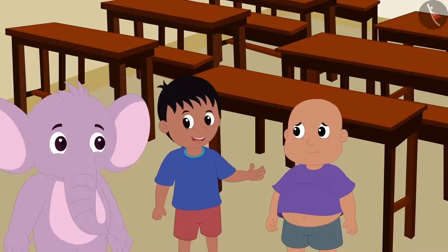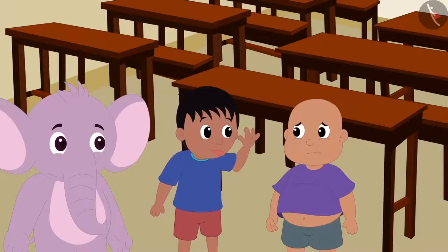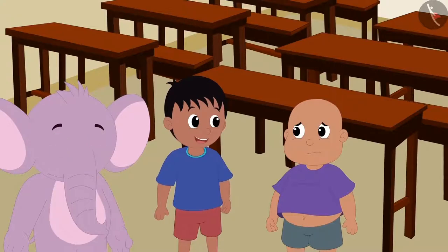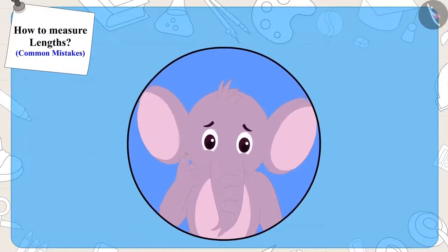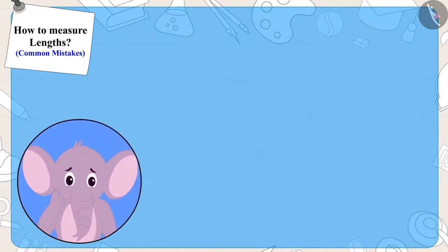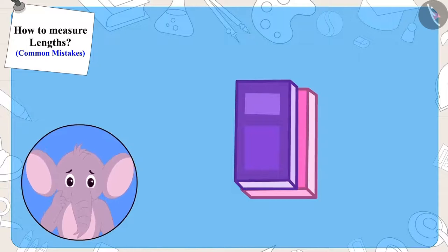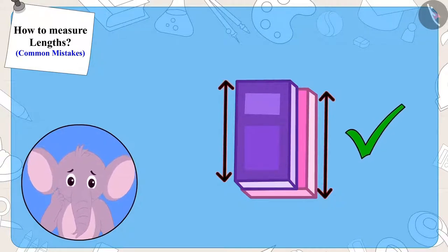Raju started teasing Bablu, saying that his notebook was longer. Appu was doubtful. He immediately kept one notebook above the other and found that both notebooks were of the exact same length.